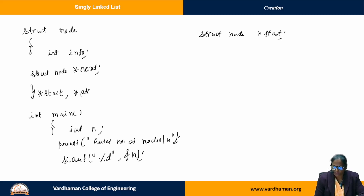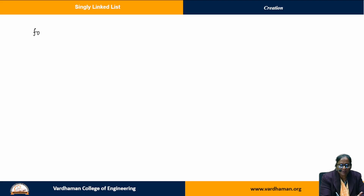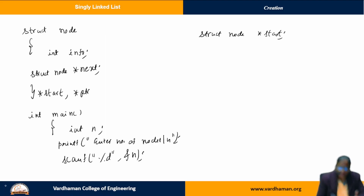Enter number of nodes will get displayed when I run the code, and after that I take an input for n. Now I know the number of nodes. I need to create each node and link them. This creation and connection of nodes has to be repeated for n number of nodes, so I am taking a for loop: for i equals to 1, i less than or equals to n, i plus plus.